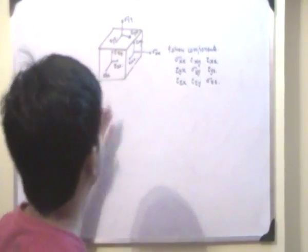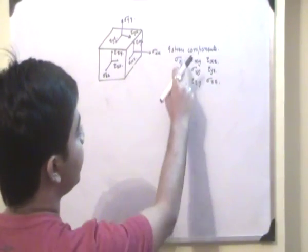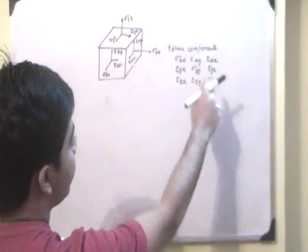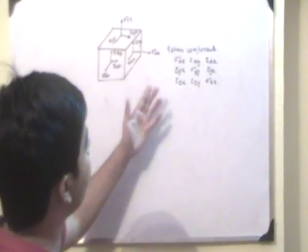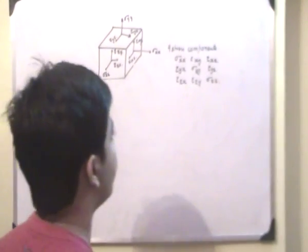As we have said in the previous lecture, this is the general state of stress at a point, which is defined by 9 stress components which are sigma xx, sigma yy and sigma zz, and tau xy, tau yx, tau zx, tau zy, tau xz. These are my 9 stress components.